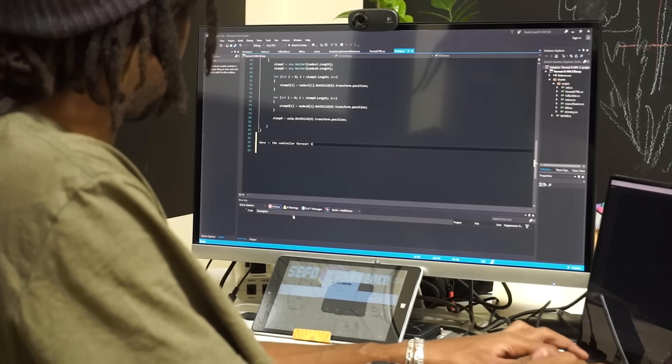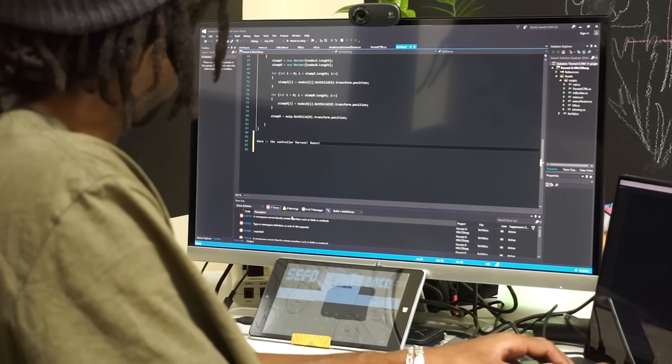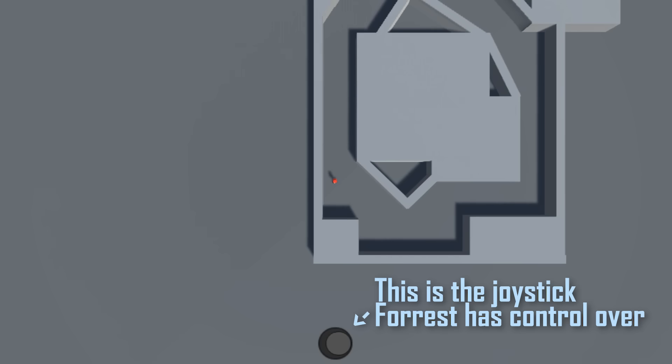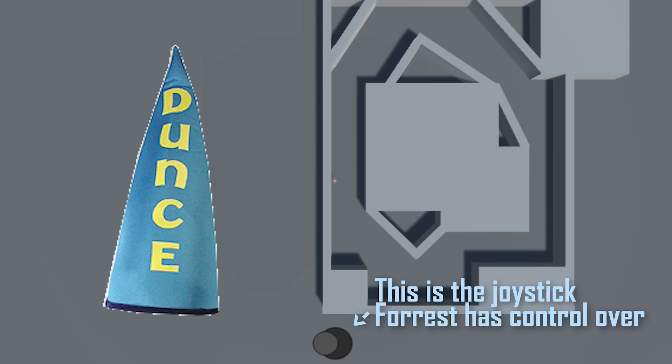So let's give this control over to Forrest. Tell him to just randomly guess how to tilt the joystick for now. And let's see what he does. Absolute dunce.